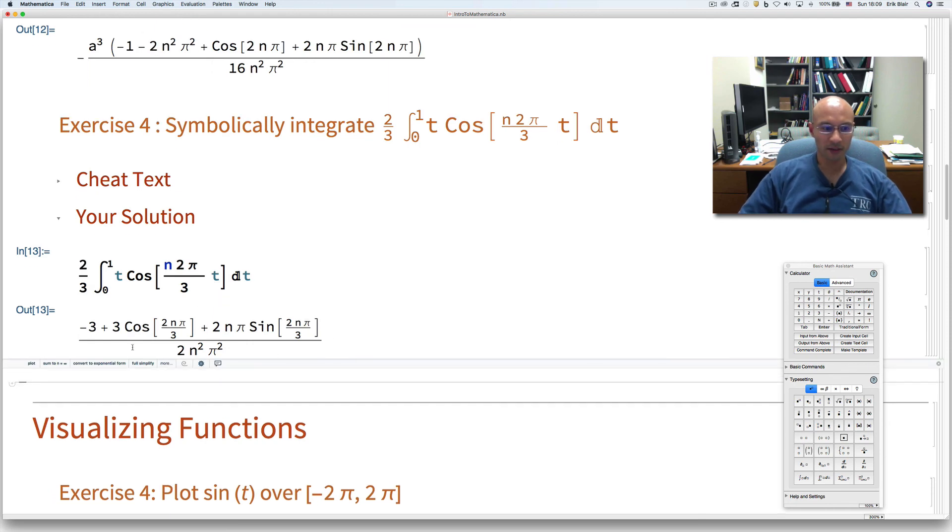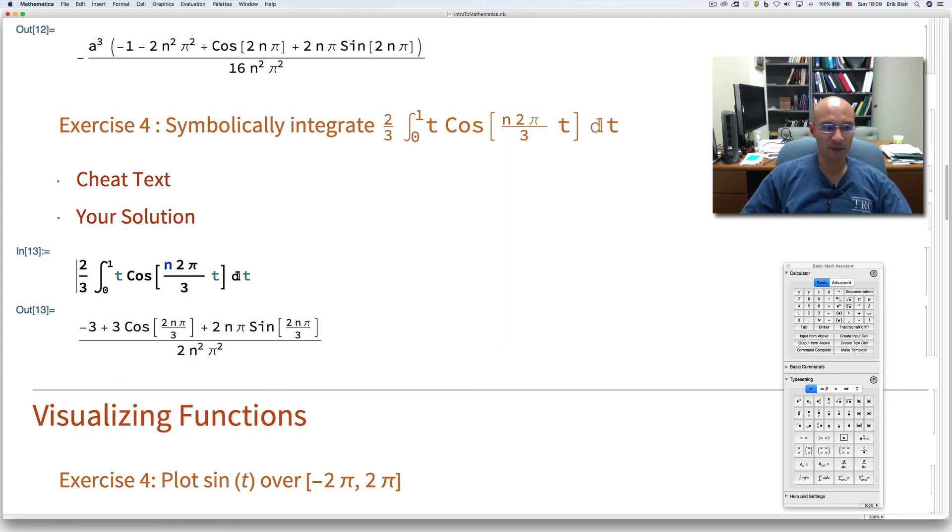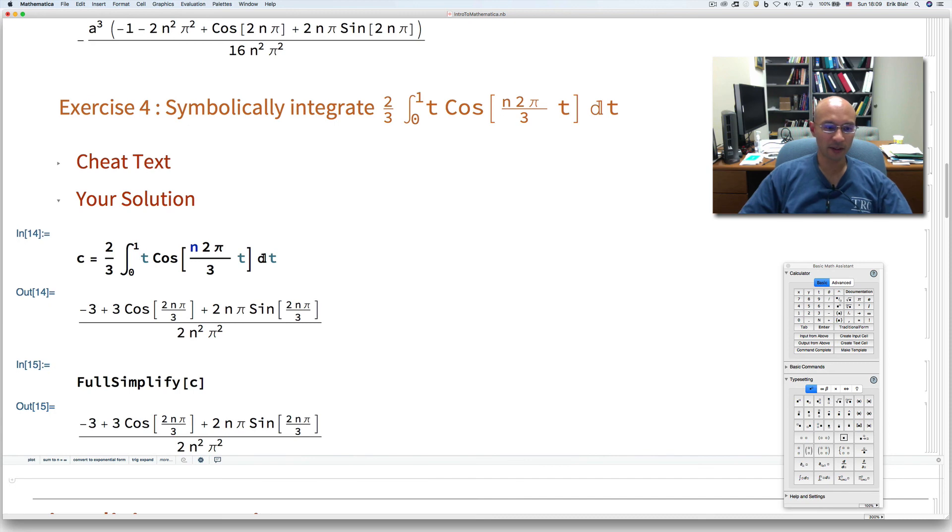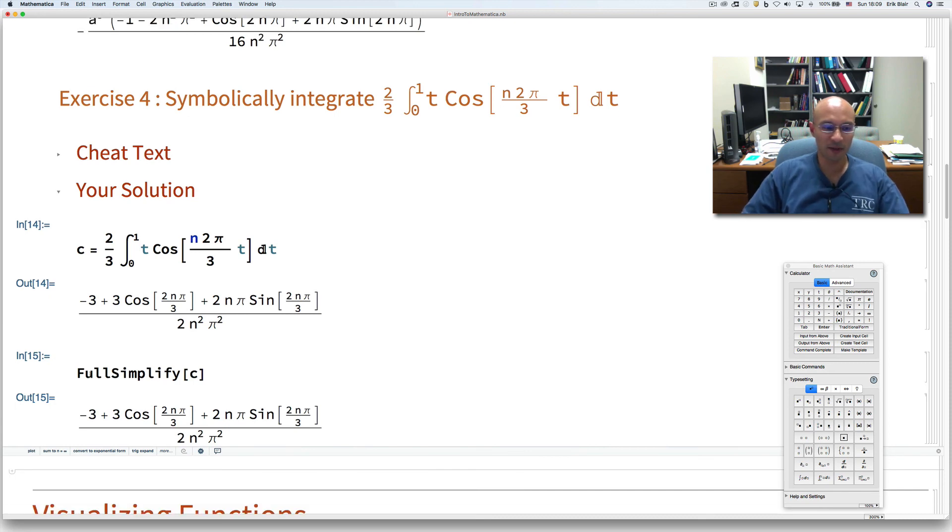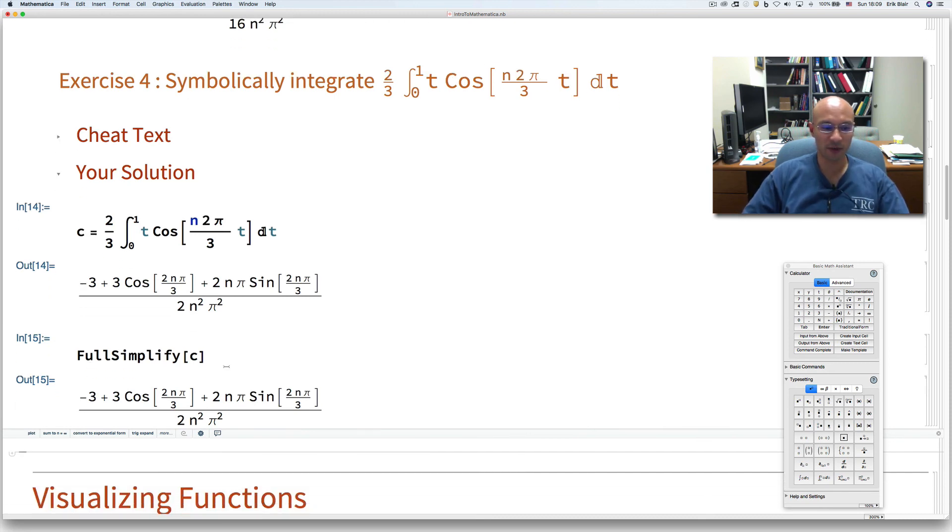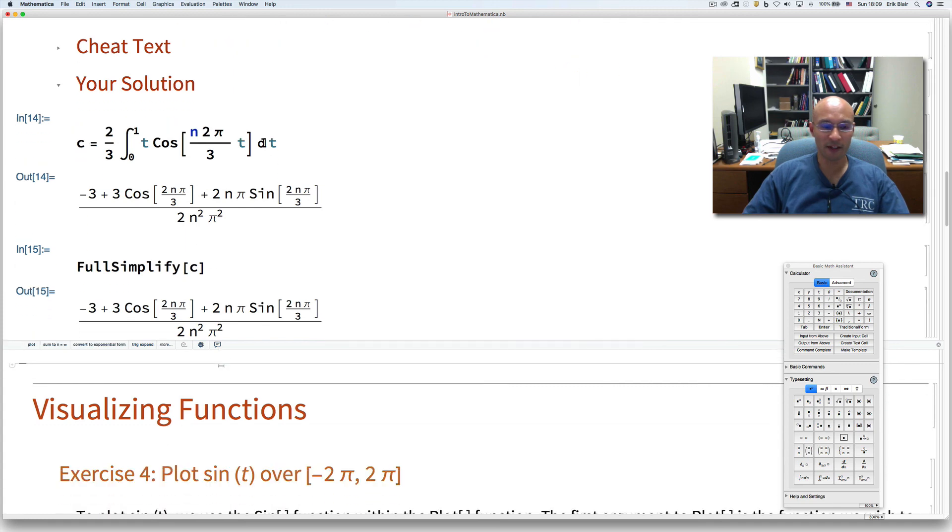And there's a nice symbolically integrated thing. Let's see what happens if we store it as a variable, and then we use FullSimplify. Okay, it really didn't do anything, but sometimes it really is quite helpful to use FullSimplify or FullSimplify with a constraint.